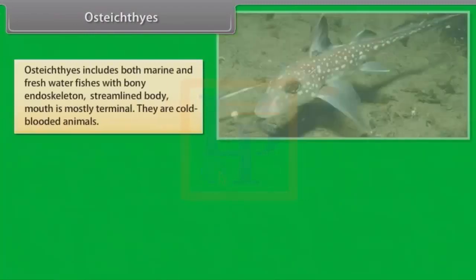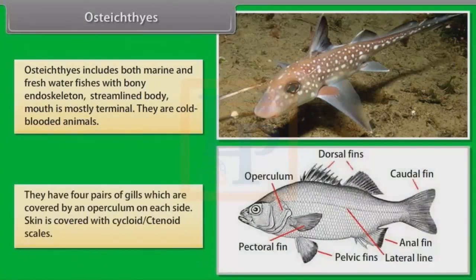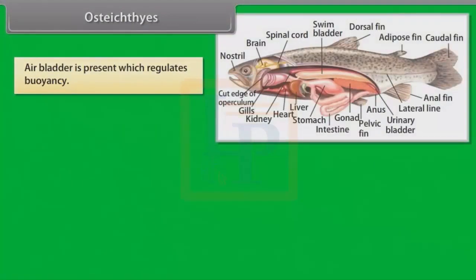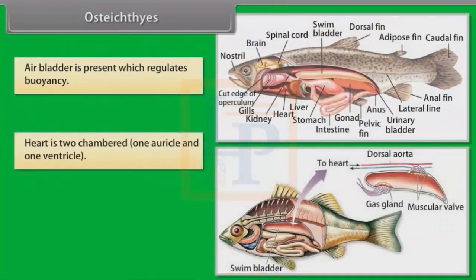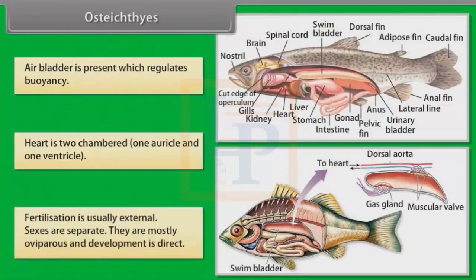Osteichthyes includes both marine and freshwater fishes with bony endoskeleton and streamlined body. Mouth is mostly terminal. They are cold-blooded animals. They have four pairs of gills, which are covered by an operculum on each side. Skin is covered with cycloid or ctenoid scales. Air bladder is present, which regulates buoyancy. Heart is two-chambered — one auricle and one ventricle. Fertilization is usually external. Sexes are separate. They are mostly oviparous and development is direct.